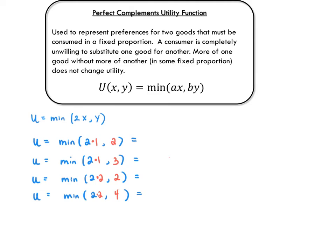Now let's consider the utility function U equals the min of 2x comma y. Let's understand how this min function works by plugging in bundles of x and y. For example, say the consumer has one unit of x and two units of y. This bundle gives the consumer the minimum of two and two units, where the minimum of two and two is just two. So this bundle gives two units of happiness.